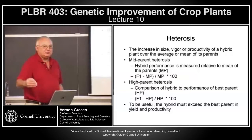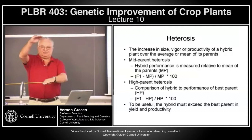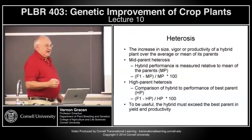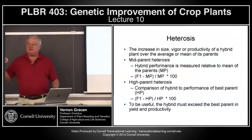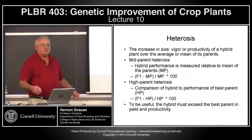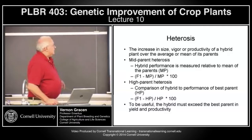To be useful, the hybrid has got to exceed the best parent by a certain percentage — enough to give additional income to the farmer to enable him to pay for the hybrid seed. When we talk about hybrids in maize, they not only had to be better than the yield of their best parent inbred variety, maize hybrids were competing against open-pollinated varieties. So the best hybrids had to have yield advantage over the best open-pollinated varieties, or farmers never would have grown them.